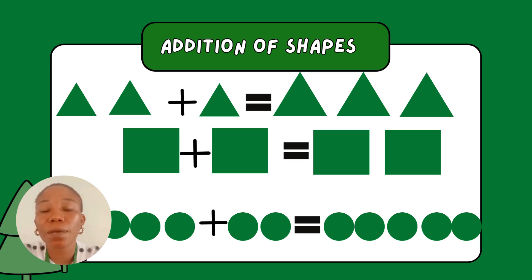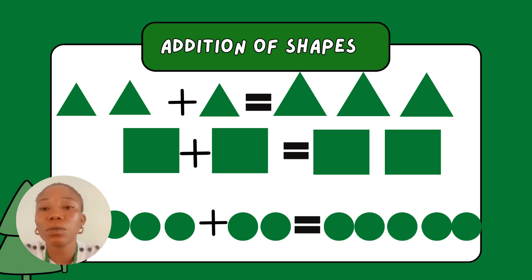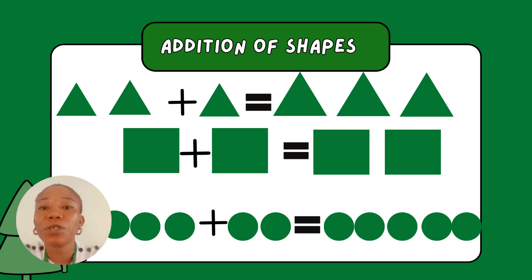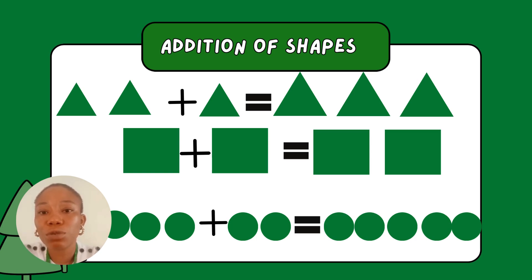Addition of shapes. We have different shapes here. The first one is triangle. We have two triangles plus one triangle. Now let's count everything together: one, two, three. So we are having three triangles.